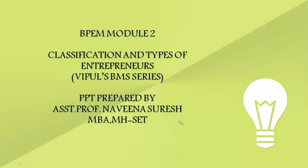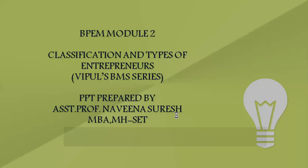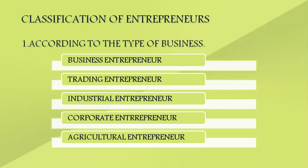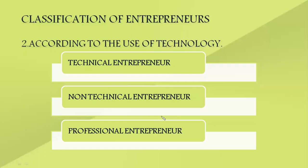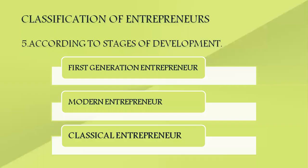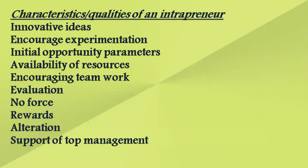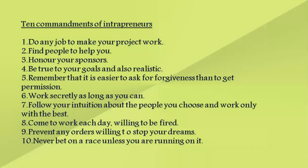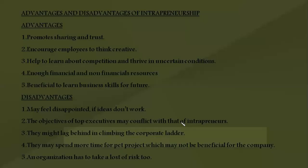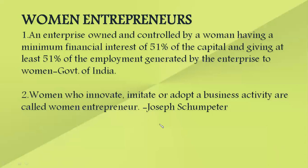In business planning and entrepreneurship management, second module, we are discussing classification and types of entrepreneurs. We started with classifying entrepreneurs into various categories according to growth stages of development, then classification by Clarence Dano, who is an intrapreneur, characteristics and qualities of an entrepreneur, classification of intrapreneurs, and advantages and disadvantages of entrepreneurship.